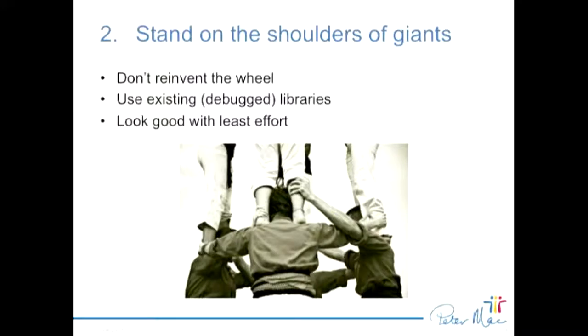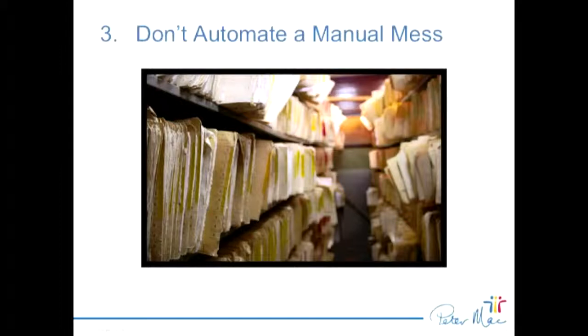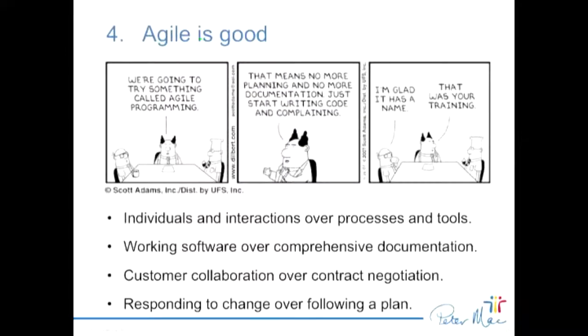Obviously, stand on the shoulders of giants — this is classic for this environment where we're using lots of open source software. Keep it debuggable and modular, as Bernie pointed out, and that's how you can look good with the least amount of effort. Another rule of mine is: don't automate a manual mess. Frequently software engineers get asked to automate something, and when you look at it it's already a mess — if you implement it you've just got a computerised mess, so you need to push back. Agile is fantastic. Rapid prototyping — building something and trying it out as a concept with your subject matter expert as rapidly as possible — is a fantastic way to evolve something very quickly.